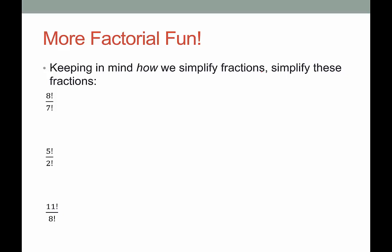We have these factorial fractions where the numerator and denominator are both factorials. We want to simplify these in the simplest way possible. One thing we could do, which is not the simplest way, is to write the whole thing out: 8 times 7 times 6 times 5 times 4 times 3 times 2 times 1 over 7 times 6 times 5 times 4 times 3 times 2 times 1. Then we see the common factors and we end up with 8. But that was more time than necessary.